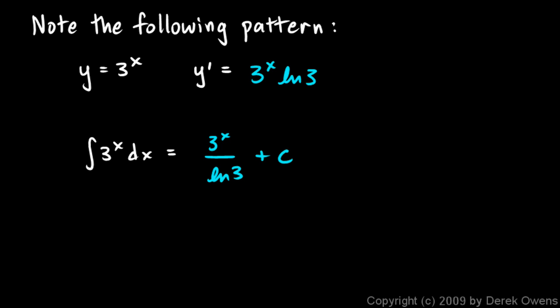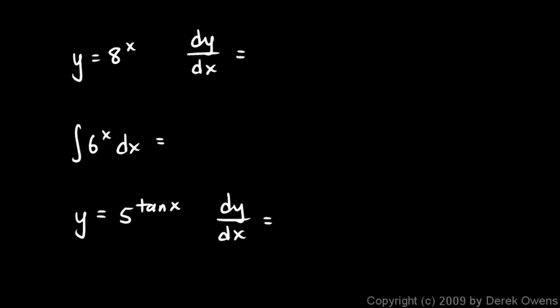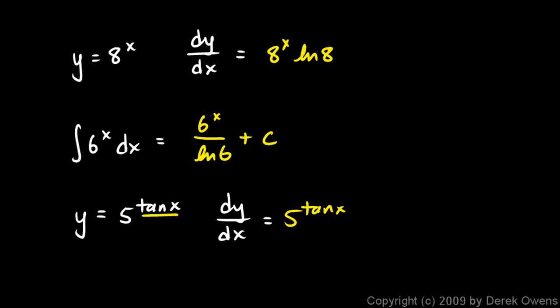A few examples: for y equals 8^x, the derivative is 8^x times ln(8). The integral of 6^x dx is 6^x divided by ln(6) plus c. For y equals 5^(tan x), this is a chain rule problem — think of tan(x) as the inner function — so the derivative is 5^(tan x) times ln(5) times the derivative of tan(x), which is sec²(x).